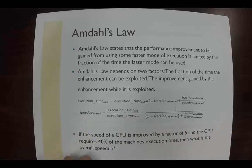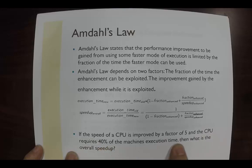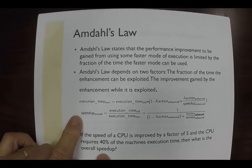So here's the problem we're going to look at. If the speed of a CPU is improved by a factor of five and the CPU requires forty percent of the machine's execution time, then what is the overall speed up? In other words, the old speed up right here.